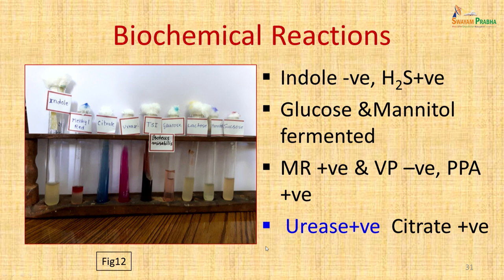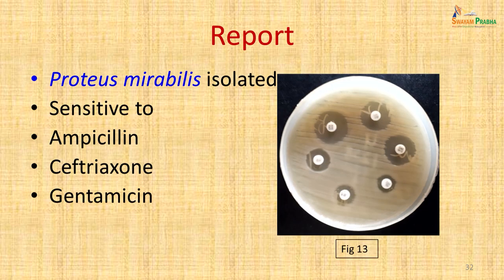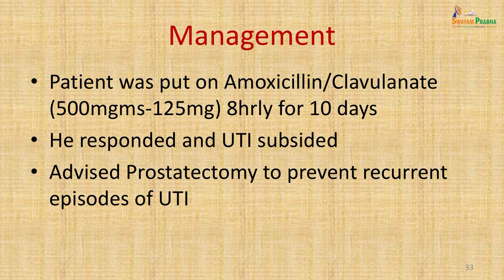The organism was identified as Proteus mirabilis, reported as sensitive to ampicillin, ceftriaxone and gentamicin. The patient was put on amoxicillin-clavulanic acid 8-hourly for 10 days. He responded and the urinary tract infection subsided. He was advised prostatectomy to prevent recurrent episodes of urinary tract infection.